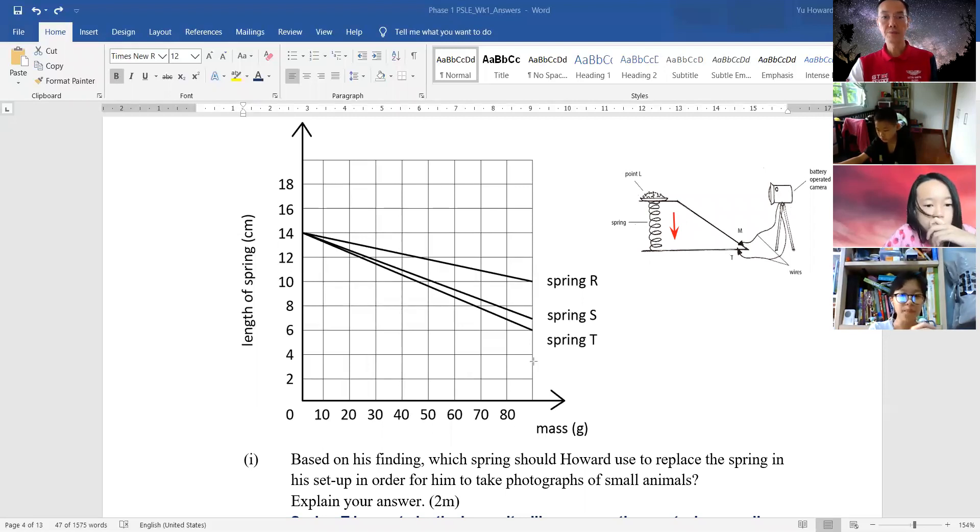So now, looking at these three springs, R, S and T, what can you tell about their elasticity? Which is most elastic or which can be compressed most easily?